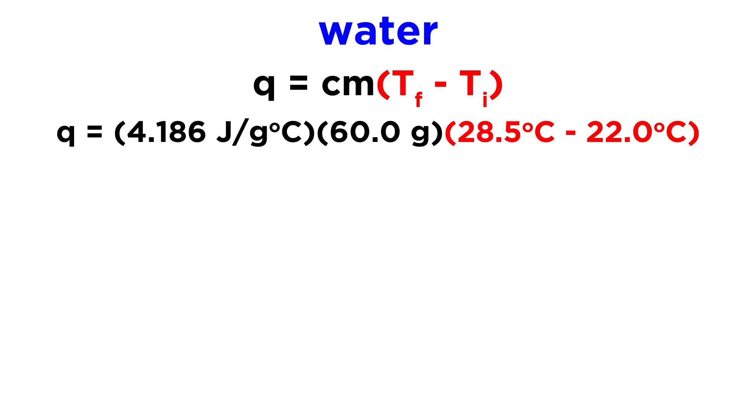And then the change in temperature, or Tf minus T initial, remember that the water ended up at 28.5 degrees Celsius. That was the final temperature, that's what it got heated up to. And then the initial temperature, we subtract the initial temperature from the final temperature, it started out at 22.0 degrees Celsius before we put the metal in there. So that is the equation that gives us how much heat was absorbed by the water, and if we do the arithmetic, we get 1,630 joules, that's to three sig figs.